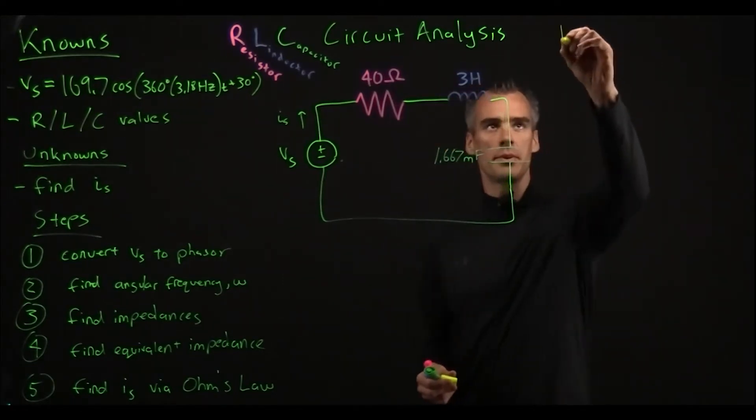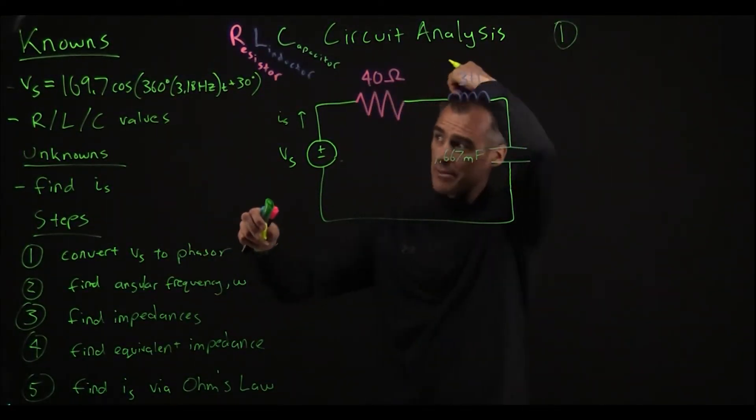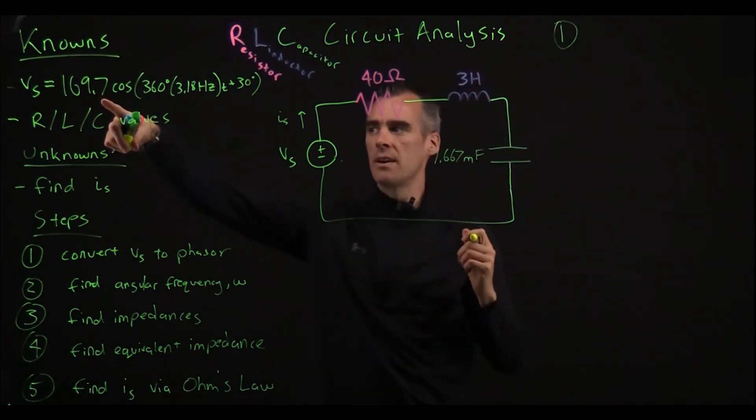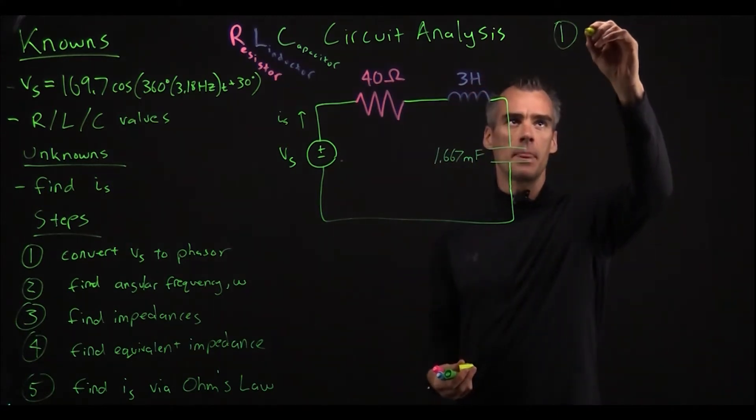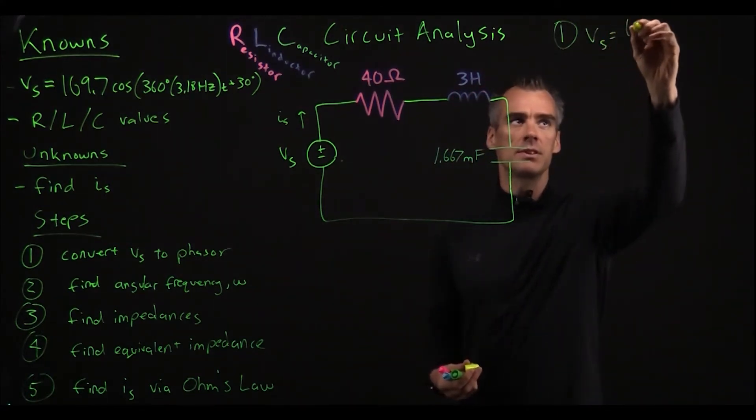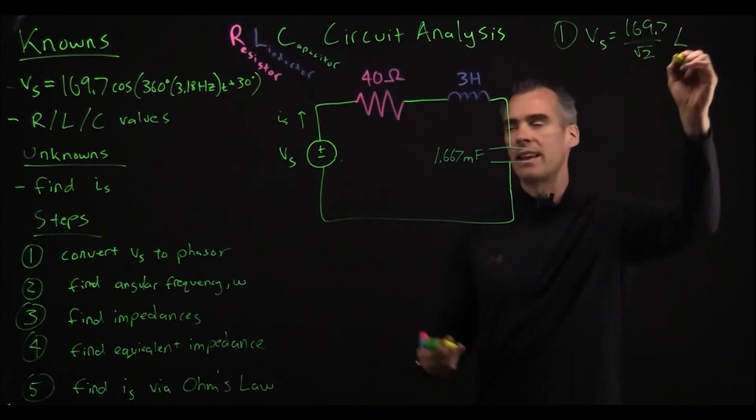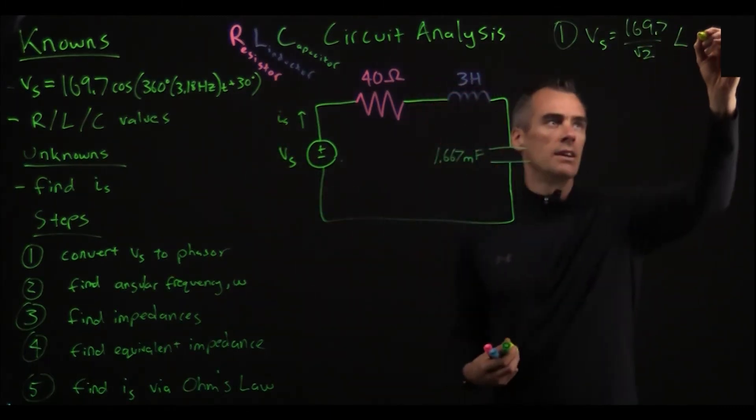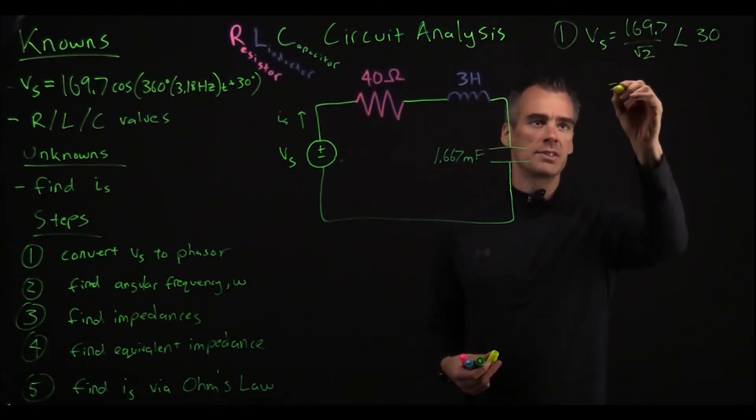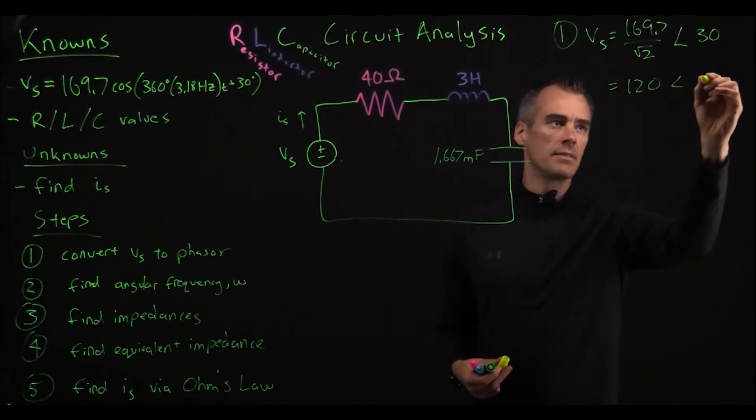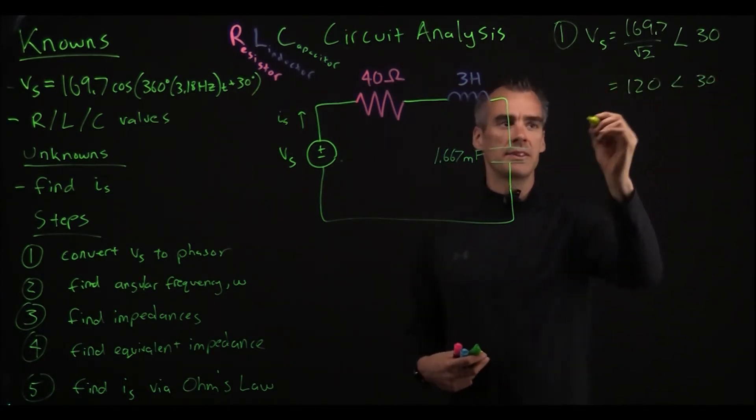So first step, we're going to convert VS to phasor. So we have 169, of course that's our VM, and in the phasor notation we're going to want RMS. So we're going to say our VS is equal to 169.7 over square root 2 as that amplitude, and that angle we're given here is 30 degrees. And dividing by square root 2, we just end up with 120 conveniently at 30 degrees. So that is our VS in phasor form.